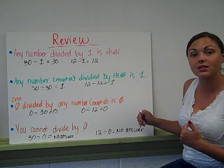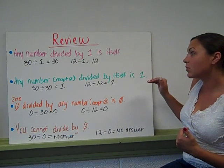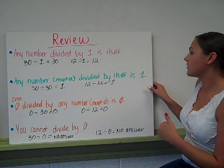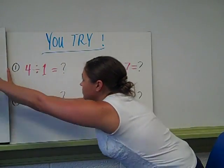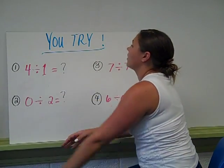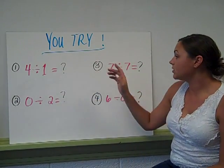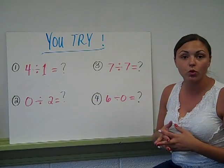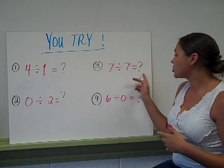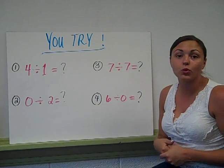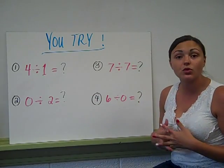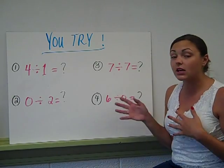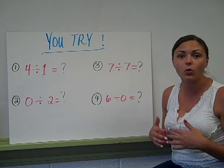I want you to study these rules tonight. Really read over them and watch the video again. Practice them. I have some problems here — 1, 2, 3, and 4 — that I want you to try. Find the answer and then tell me what the rule is. Tell me what the quotient would be for each one and what rule it follows. I also want you to write down any questions you might have had about this video and bring your answers and questions to class tomorrow, ready to discuss. Thank you.